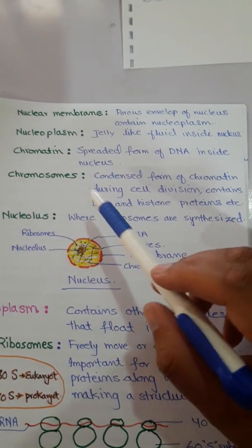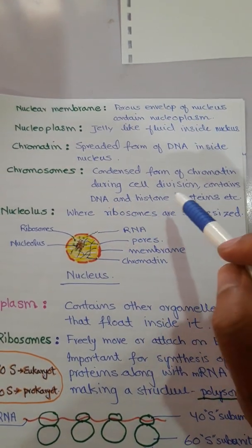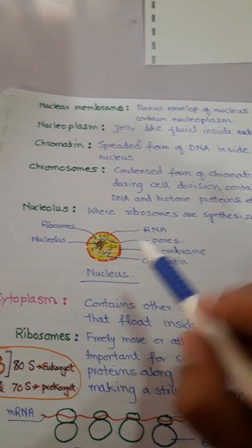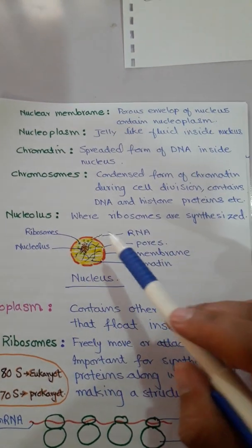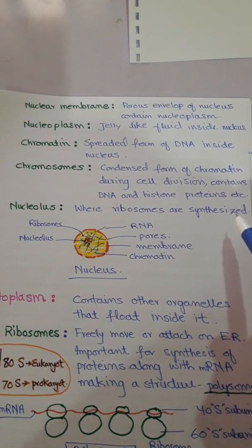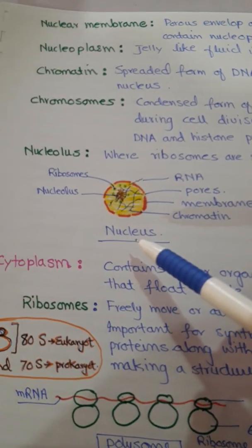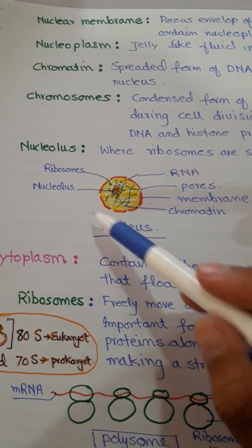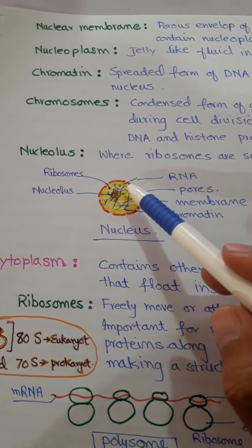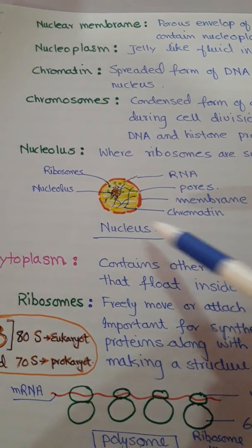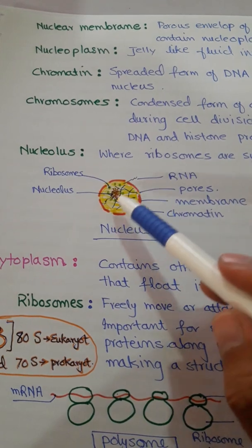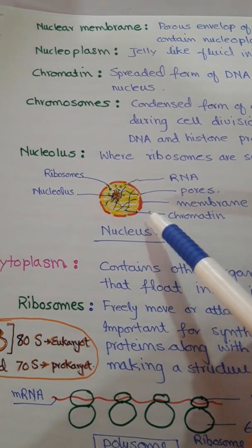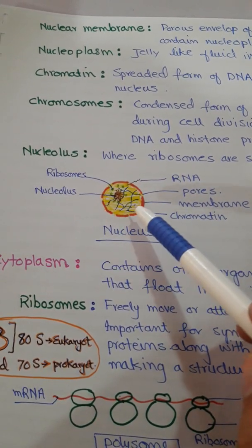Chromosomes are the condensed form of chromatin during cell division; they contain DNA and histone proteins, as well as other scaffolding proteins. The nucleolus is the site where ribosomes are organized and synthesized. The nucleus structure shown contains a nuclear membrane with nuclear pores through which RNA enters the cytoplasm, chromatin material, the nucleolus, and nucleoplasm shown in yellow.